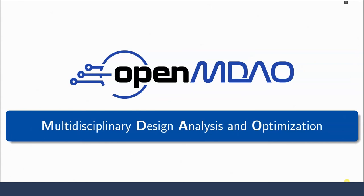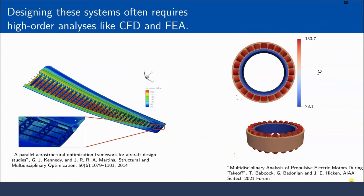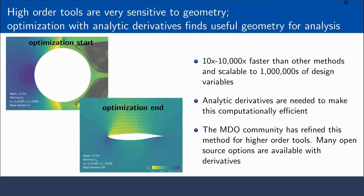One tagline I really like for OpenMDAO is that it makes hard things easy, and it makes impossible things hard. Here are some examples of highly complex coupled multidisciplinary systems solved using OpenMDAO: aerostructural wing design, a podded engine coupled to aerodynamics and propulsion, and satellite orbital tracking. Going deeper, if you have CFD and FEA and want high-fidelity modeling in an optimization loop, you can do that with OpenMDAO. Higher-fidelity tools are very sensitive to geometry, which motivates the use of analytic derivatives to make it computationally tractable.